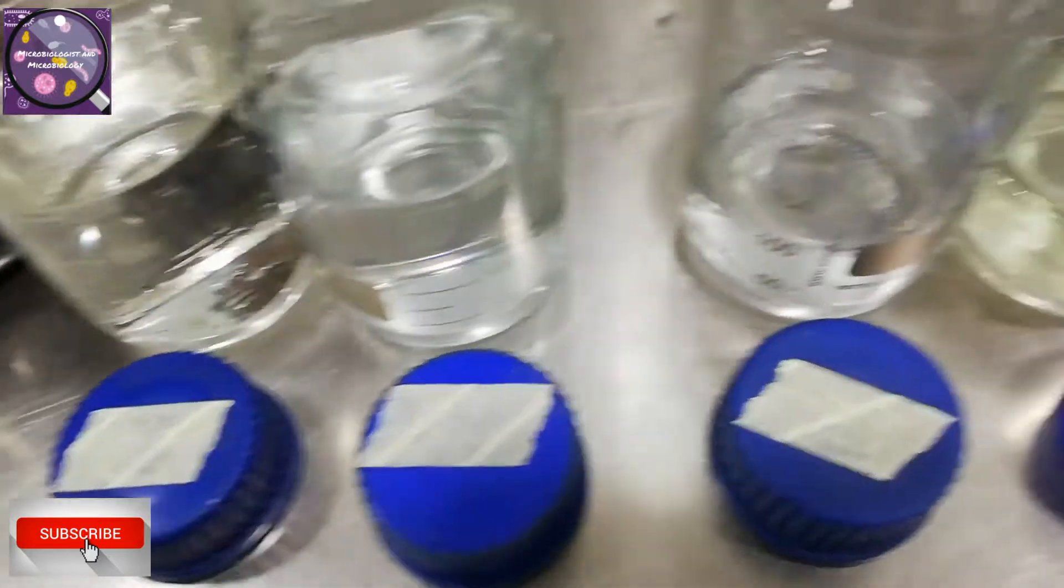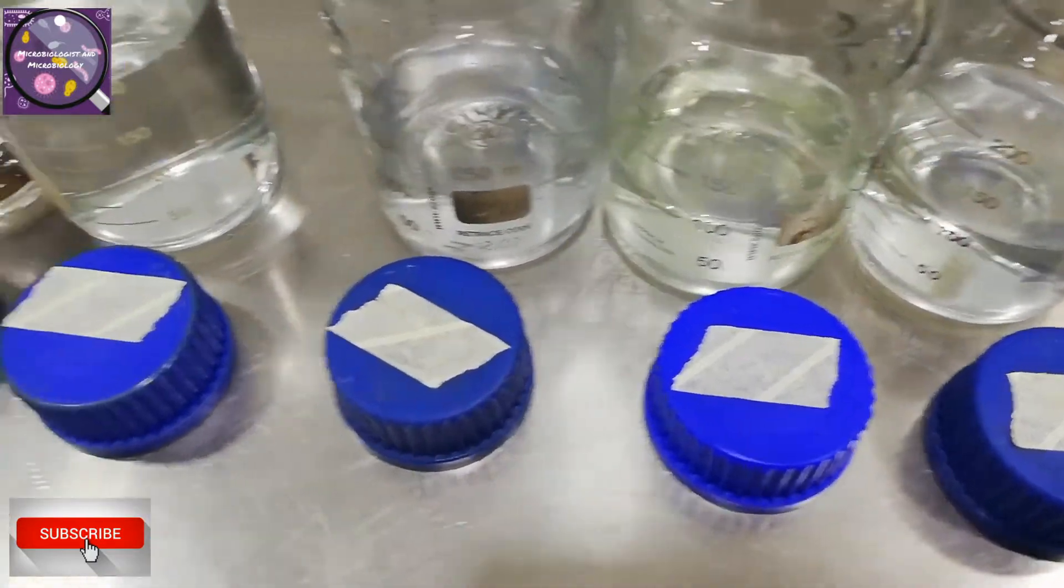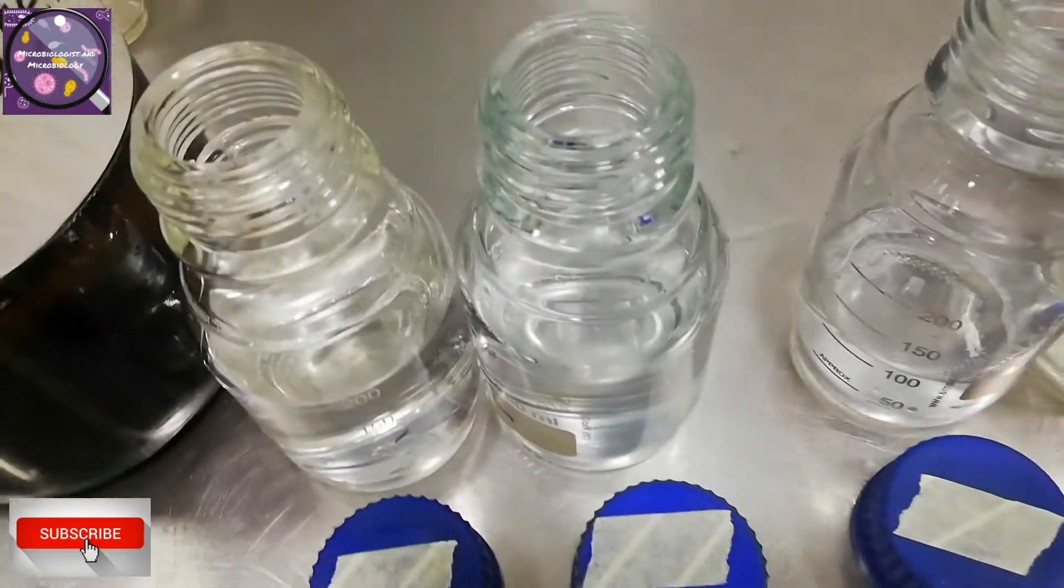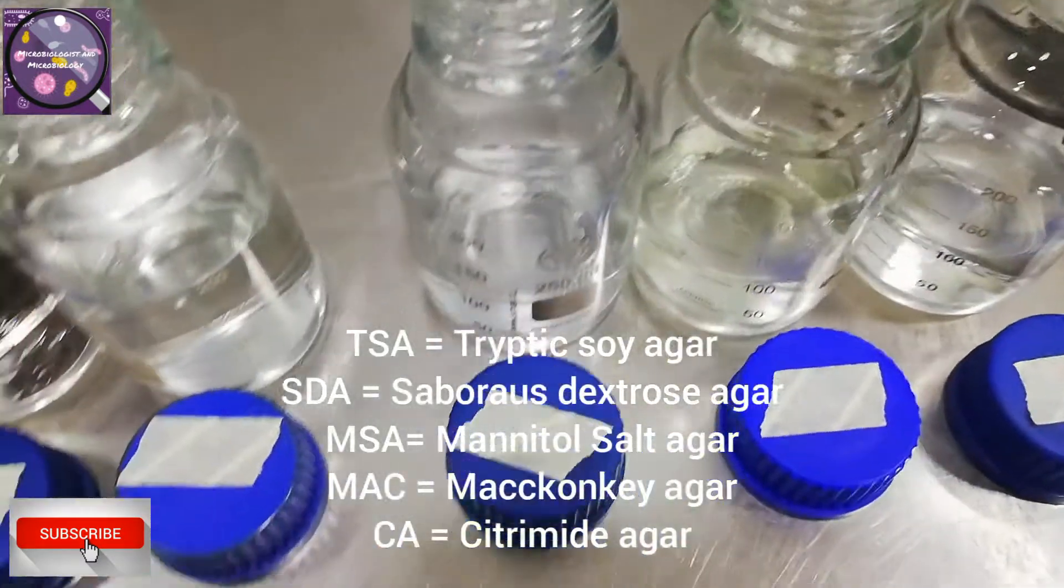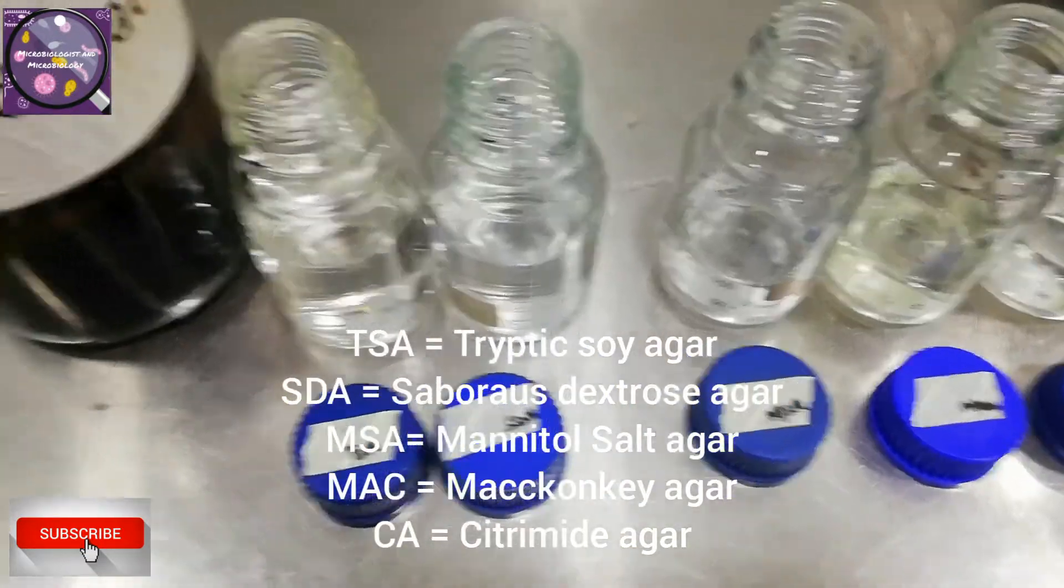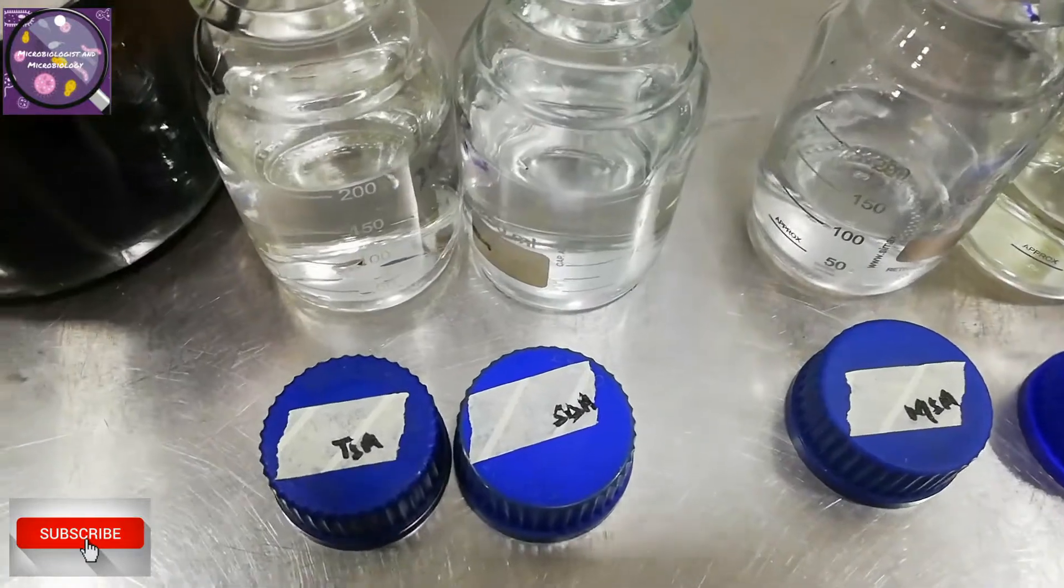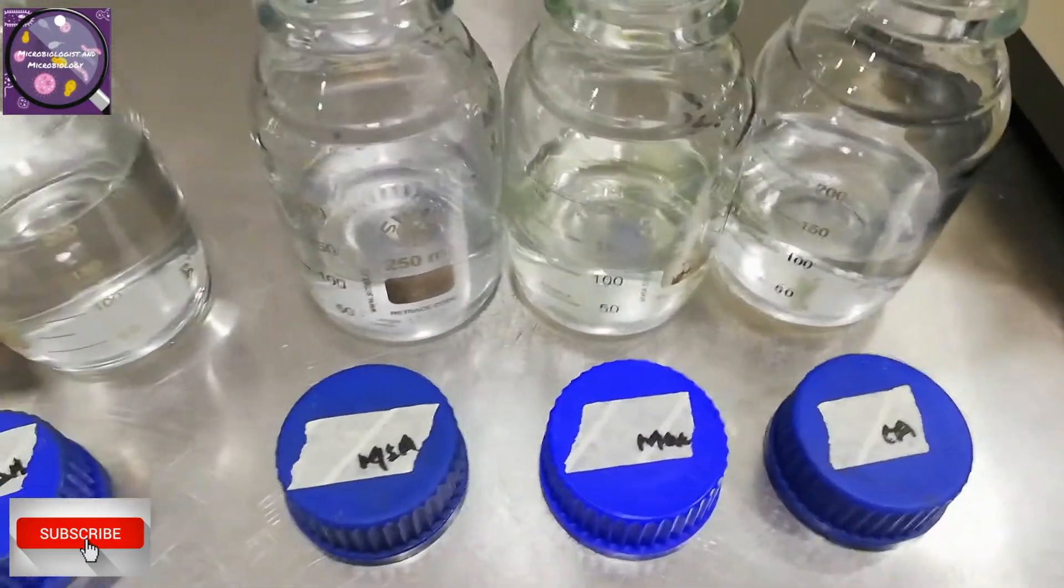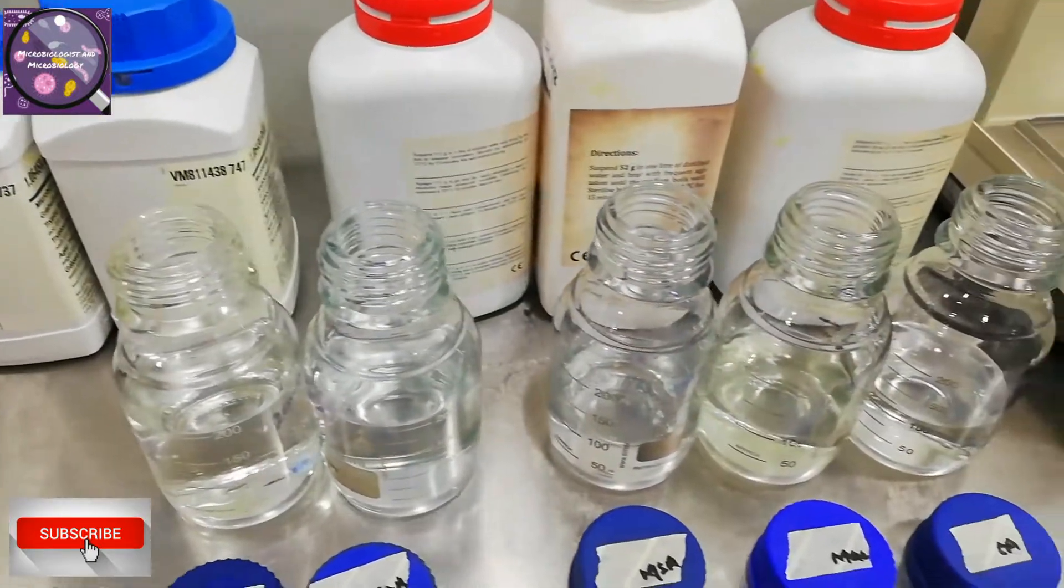Now I placed or stick the tape on cap. This tape is autoclave tape and it will change its color after sterilization cycle. I am writing down the codes of media. You can see the codes for particular media on screen. Here are the codes for each media on cap. Let's start measuring dehydrated media through weighing balance. The weighing balance is verified for the day.